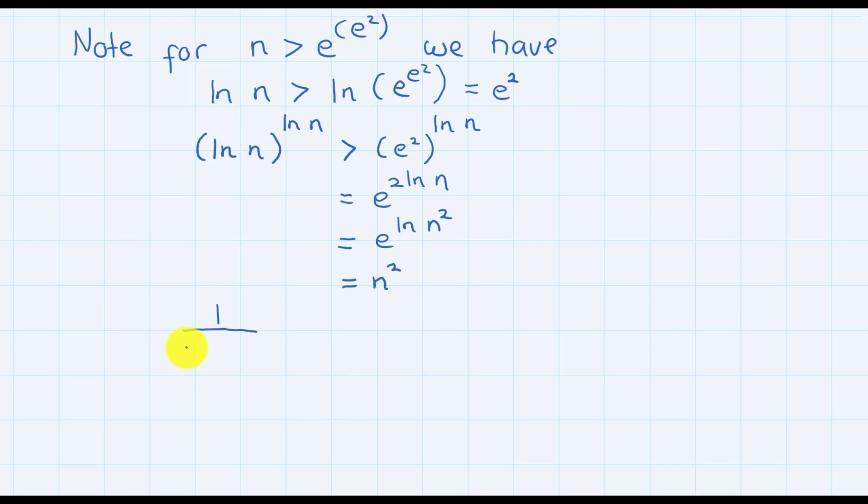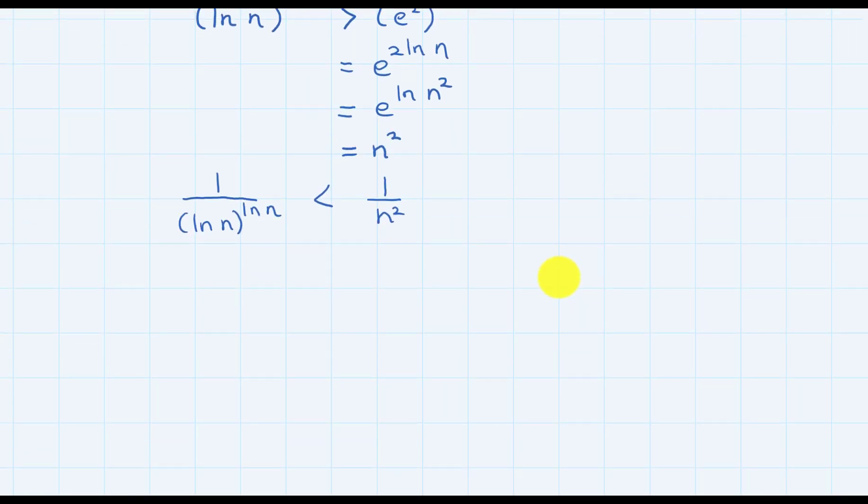Then it follows that 1 over (ln n)^(ln n) is smaller than 1 over n². Now notice that the series where the terms is 1/n² is convergent. Therefore, by the comparison test, since this guy is smaller than the series whose term is 1/n², this is also convergent.